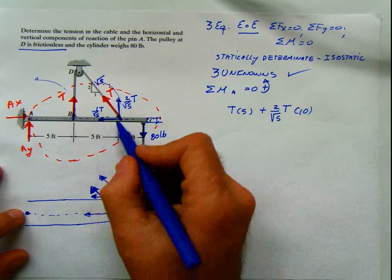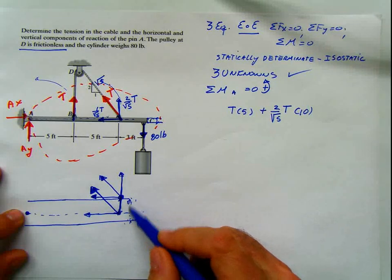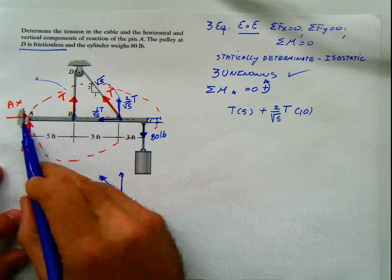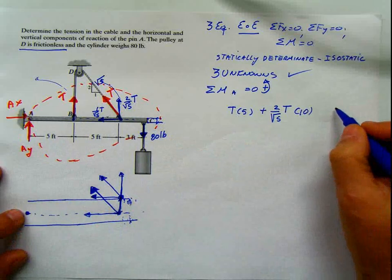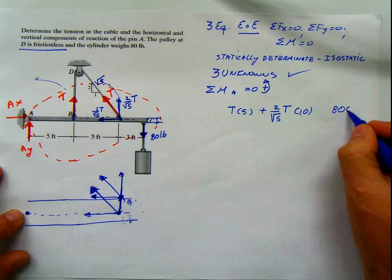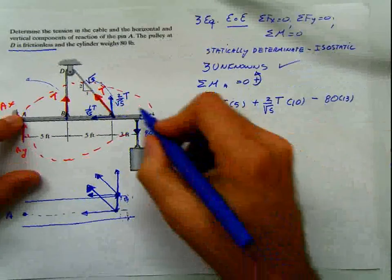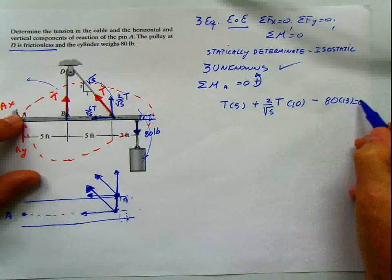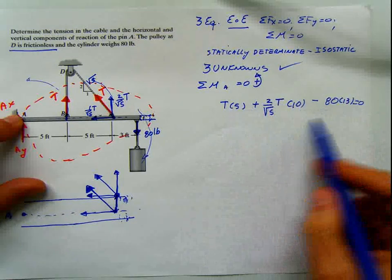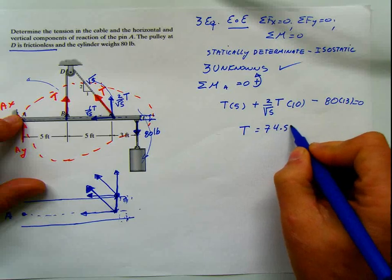So this force is passing through point A, meaning there's no moment from the horizontal component. There can be situations where the force is applied offset and you have that thickness distance — be careful with that. So we have the two T components and the last force, which is 80 pounds. The force is vertical and the horizontal distance is 13. If I apply this downward, the moment is clockwise, so it's negative. Setting everything equal to 0 and solving for T, the only unknown, we get T equals 74.533 pounds.